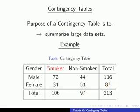Along the top we have our two options for our first categorical variable — smoker and non-smoker — and along the side we have the two options for our second categorical variable, which are male and female. The table we have here is called a frequency table, because it records the count values for our study.